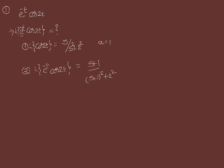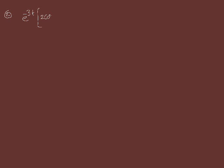The second problem is: find Laplace of e^(-3t)·(2cos(5t) - 3sin(5t)). We first distribute: this equals 2·e^(-3t)·cos(5t) minus 3·e^(-3t)·sin(5t). We will solve each part separately.